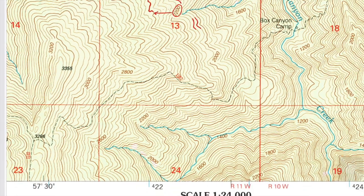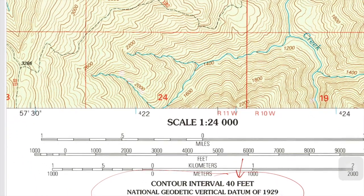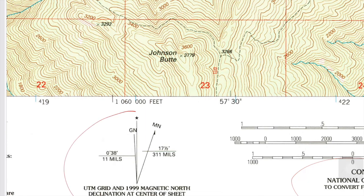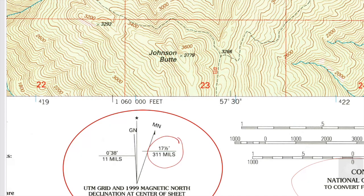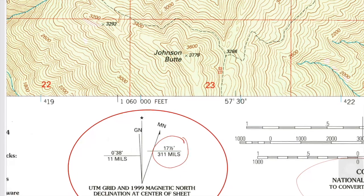Knowing the contour interval helps you determine the elevation you're going to be climbing in any given area utilizing the topo map. Next, magnetic declination — I'm going to give a more in-depth class on this, but just understand you have three norths: grid north, which is the map itself; true north, the actual north; and MN, which is magnetic north — your compass reading. On a declination diagram, this particular topo map has a declination of 17.5 degrees, which means you're going to have to add or subtract your compass reading to navigate correctly on the map. I'll get into that at a later time.